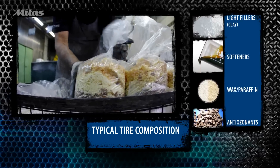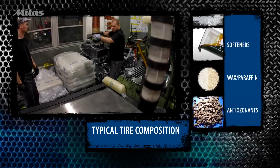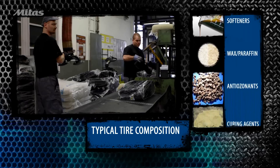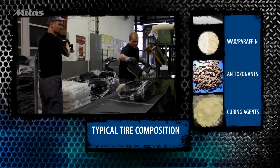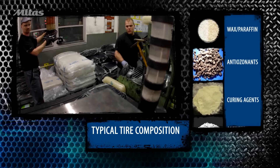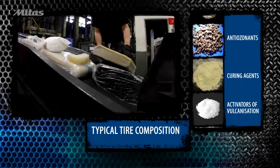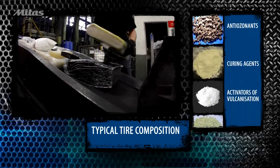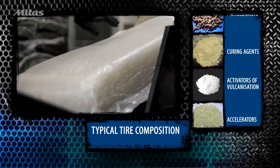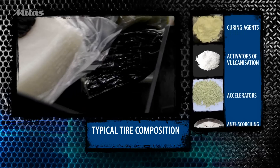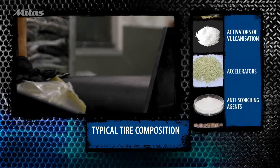At the last stage of mixing, sulfur and curing agents are added. The resulting compounds have various properties. Some are used for the inner liner, which holds air inside the tire, and others are wear resistant and are used to make the tread.